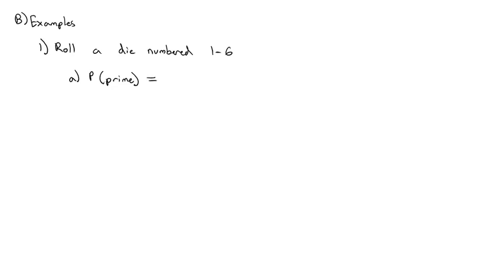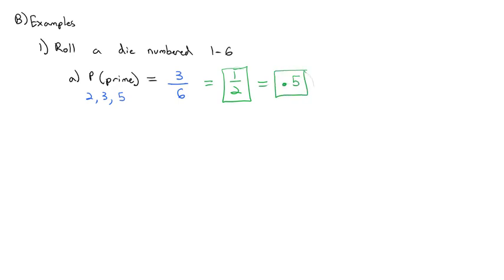We want to first calculate the probability that we roll a prime number. The primes are 2, 3, 5, 7, 11, 13 — but 2, 3, and 5 are the only possibilities on this die. So the number we want is 3 options out of 6 total, which reduces to one-half. Probabilities can be expressed as a fraction, a decimal (0.5), or a percentage (50%), depending on what format the answer calls for.